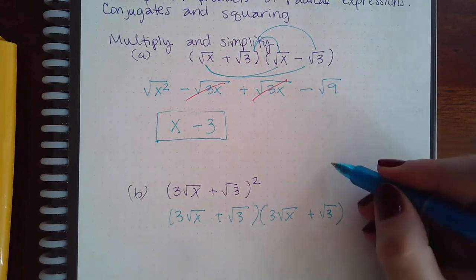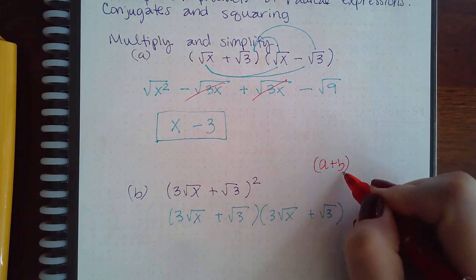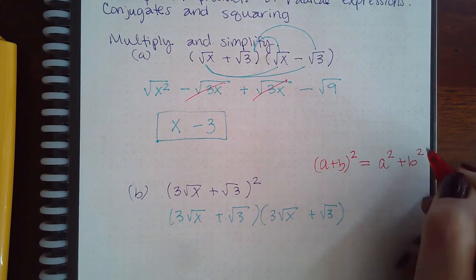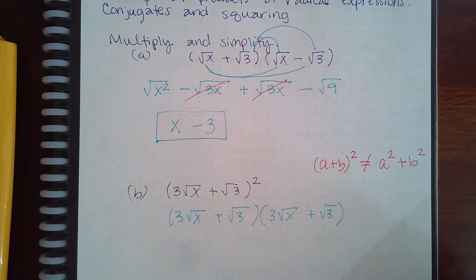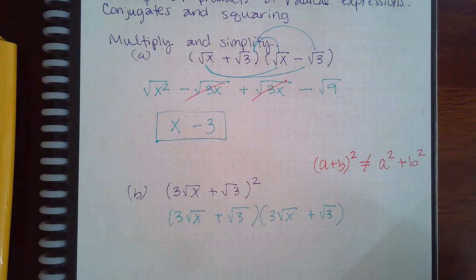Just FYI, there is no rule that says if you have a binomial and you square it, that you'll get the first term squared plus the second term squared. There's no such rule. And this is actually not true for any a or b value.